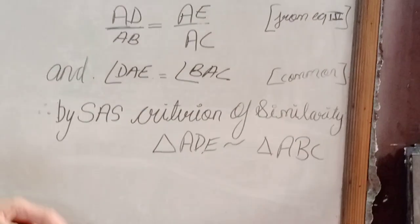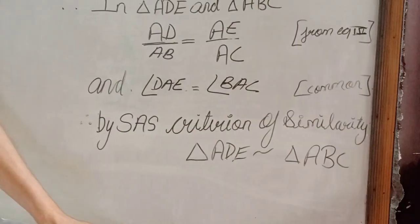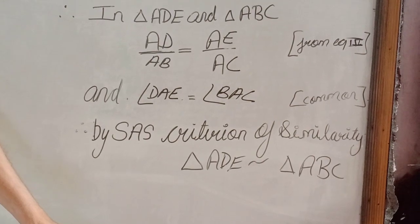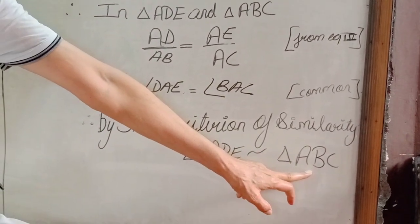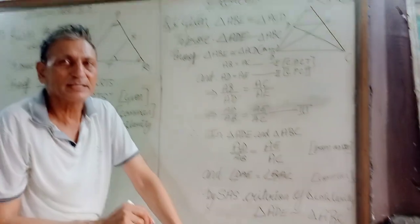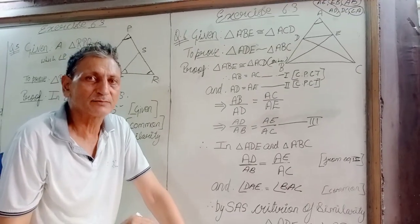So by SAS similarity criterion, we have triangle ADE similar to triangle ABC. And this is what we were to prove. Thanks for joining.